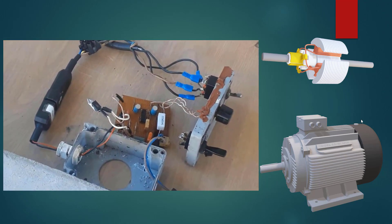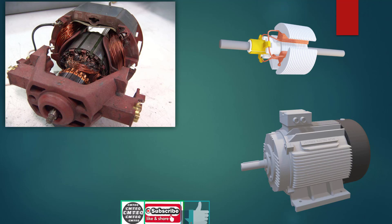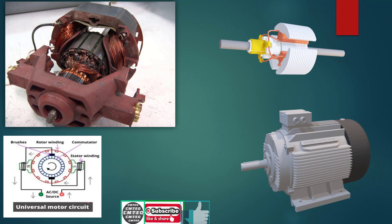Before we go into reviewing our circuit and starting the PCB layout, I'd like to briefly mention a few basics of the universal motor, as we can see in this picture taken from Wikipedia. A universal motor is a special type of motor designed to operate on either DC or AC supply at approximately the same speed and output power. So if you put in 200 volts AC or 200 volts DC, you get approximately the same speed and power output.